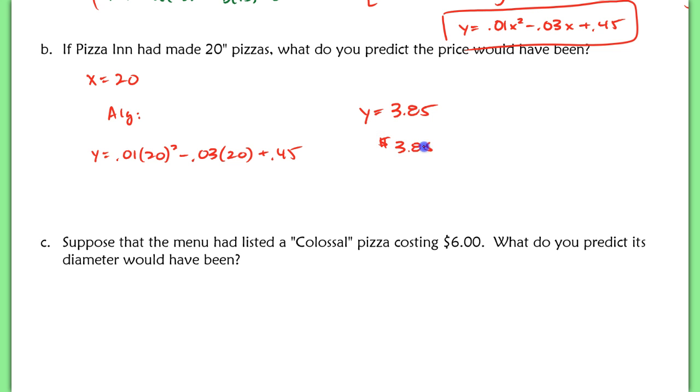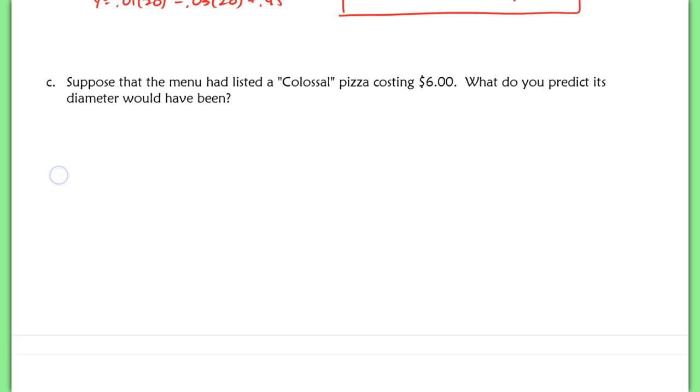I'm going to hit 2nd calc. And we're going to do value at 20. So this is an x input of 20, and we get a y output here of $3.85. So it costs $3.85 for a 20-inch pizza. And please make sure you're answering your questions in a sentence. Even if I forget to do that in the problem here, make sure you're doing that on your quiz.